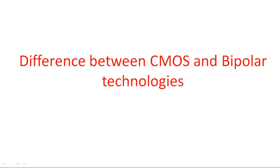In this video, I am going to explain the comparison between CMOS and bipolar technologies. These are two important technologies — CMOS is used for low power applications, while BJT is used for fast applications. There are some remarkable differences between these two technologies that one should know before going for the fabrication of bipolar and CMOS technologies.